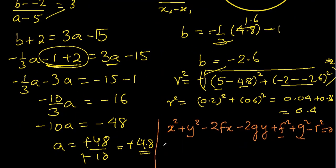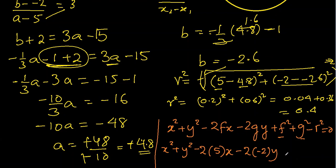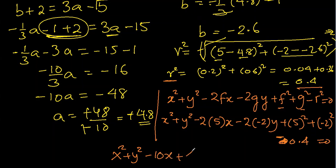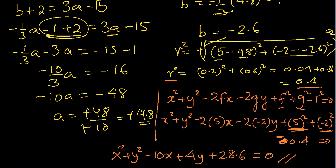Substituting: x squared plus y squared minus 2 times 5 times x minus 2 times minus 2 times y plus 5 squared plus minus 2 squared minus r squared equal to 0. This gives x squared plus y squared minus 10x plus 4y plus 25 plus 4 minus 0.4 equal to 0. So the final equation of the circle is x squared plus y squared minus 10x plus 4y plus 28.6 equal to 0.